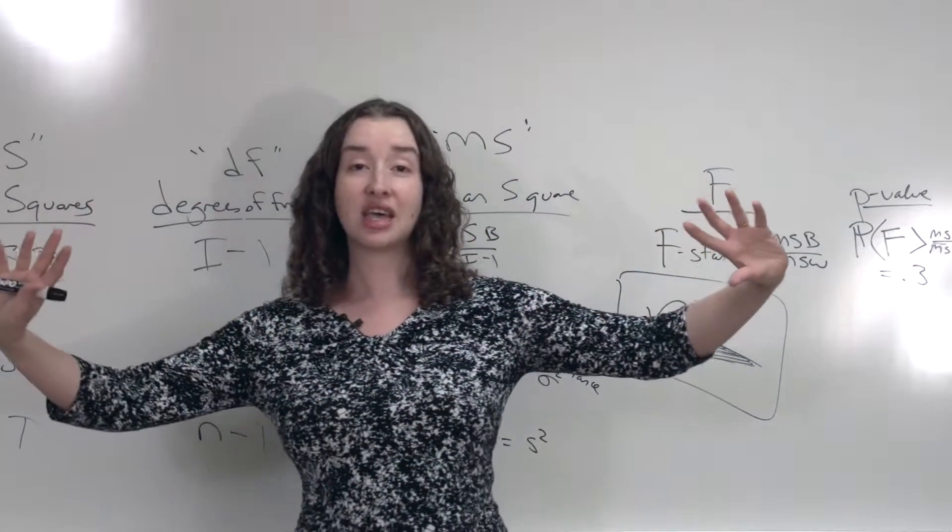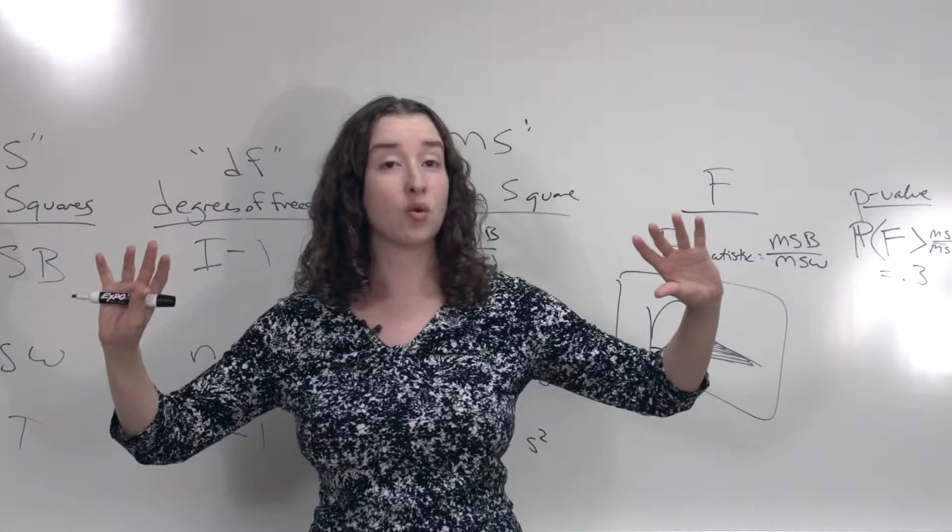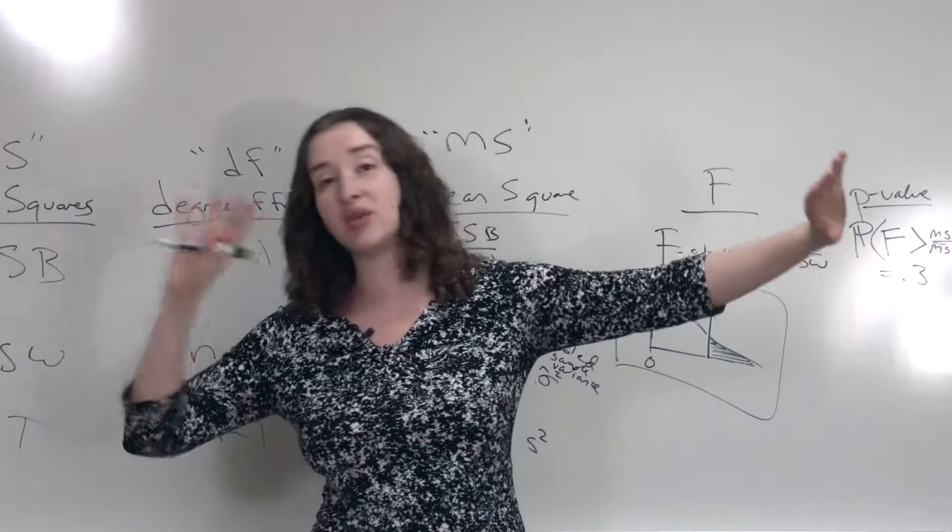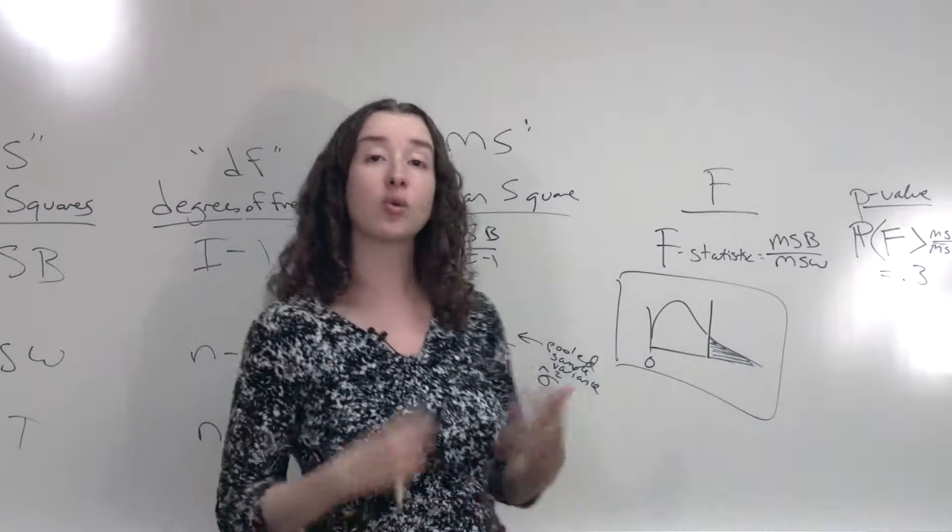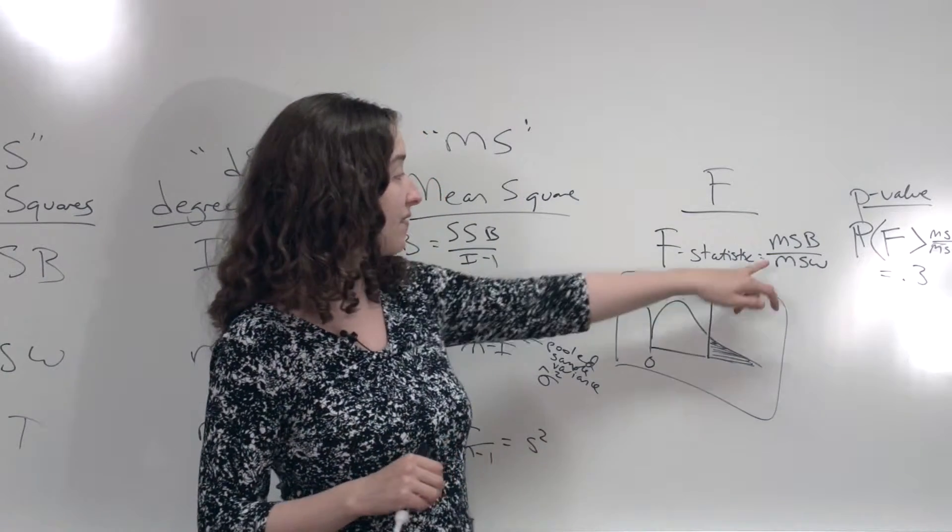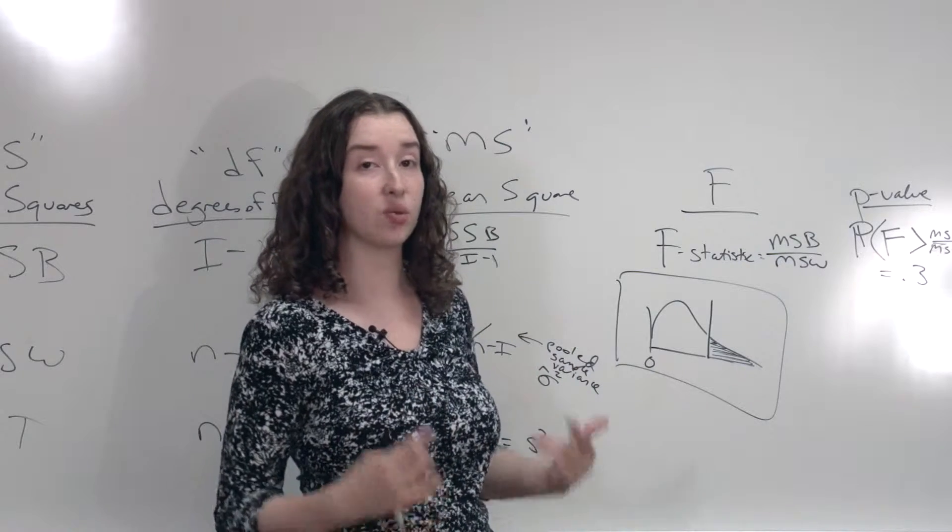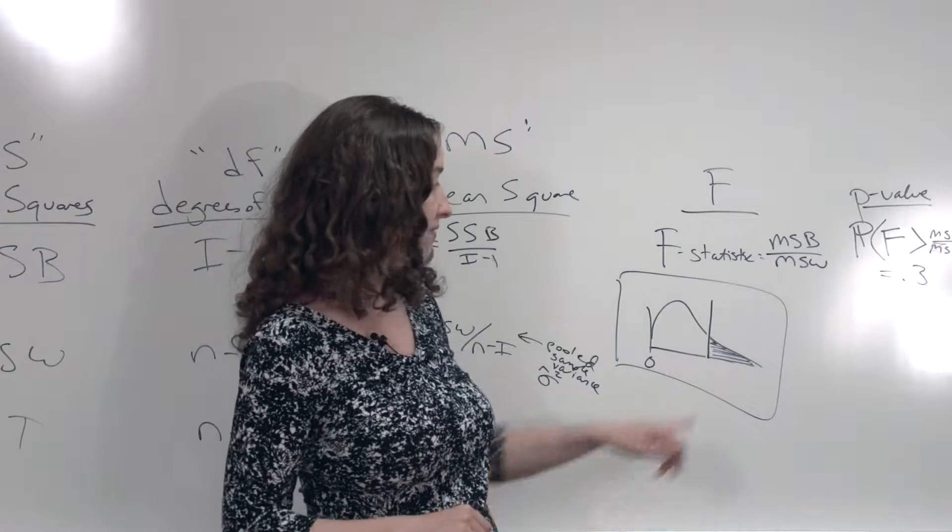So unlike the t-tests or the z-tests where you think of the two possible tails where we'd be surprised either if the difference is big or if the difference is small, here we're only surprised by our data, assuming the null is true, if this ratio is big. We're not surprised if it's small. So there's no such thing as a one-sided or two-sided test for the f-test.